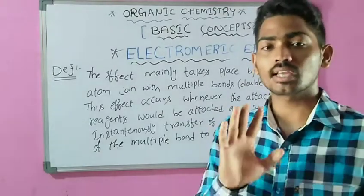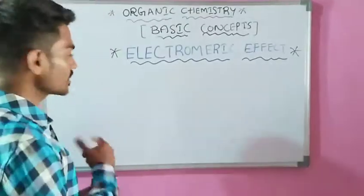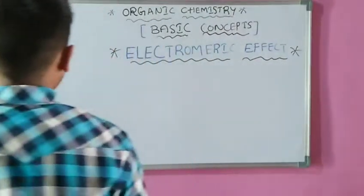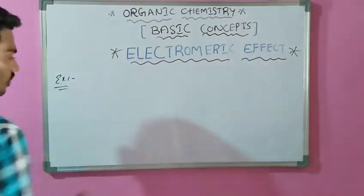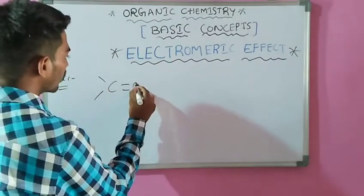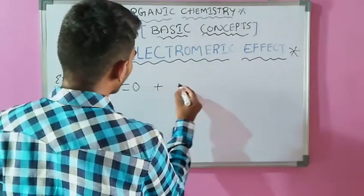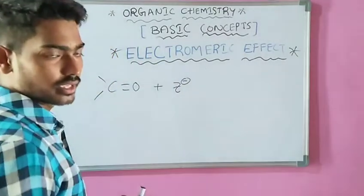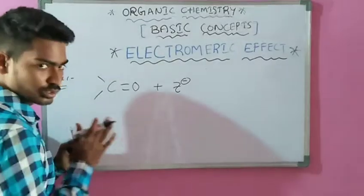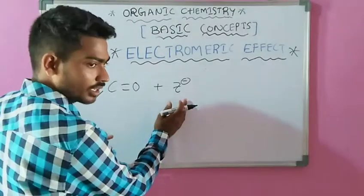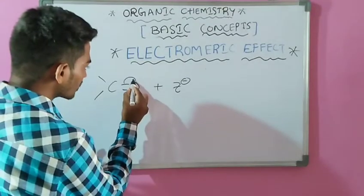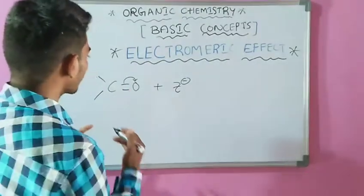Now we are going to look at what is the Electromeric effect by example. For example, a double bond containing compound, that is a carbonyl compound, which is treated with a nucleophile. Either electrophile or nucleophile are attacking reagents. Whenever this nucleophile comes closer to this carbonyl compound, at that time this bond migration takes place — that is, charge transfer takes place.